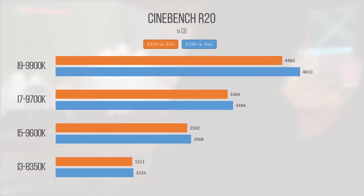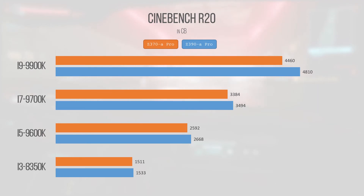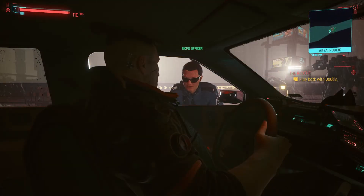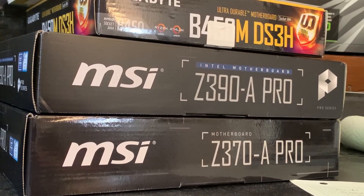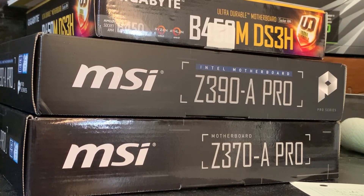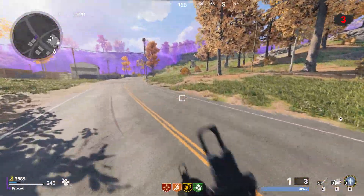That's shown nicely through Cinebench R20. Looking at the scores between the platforms, you'll see the i3 8350K was within margin of error between Z370 and Z390. However, jump up to the i5 and now it's a bit wider. The trend continues with the 9700K, but is most notable with the 9900K. This can be explained through power delivery improvements made with Z390, meaning our i9 is able to tap further into its power budget. This Z390 board — an MSI Z390A Pro — includes an extra three VRMs, bringing the count up to nine from Z370's six, meaning the chip is able to boost its clocks higher.